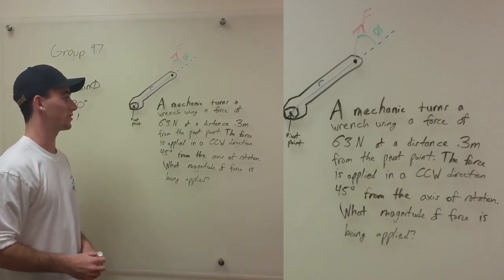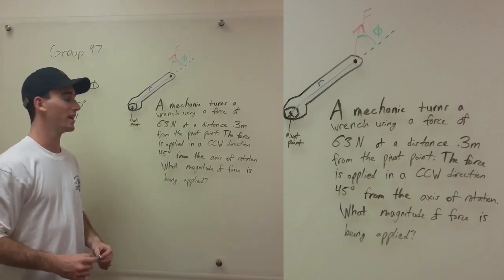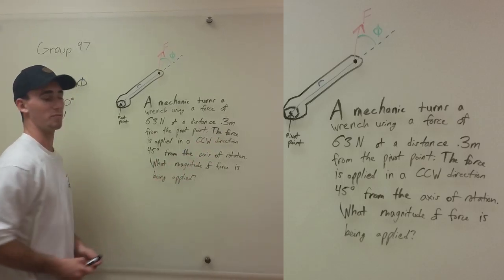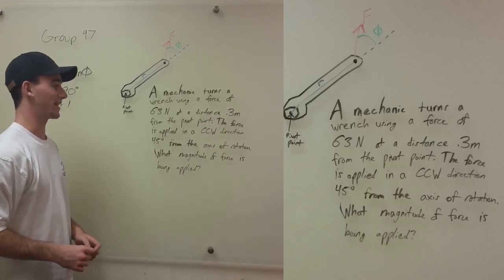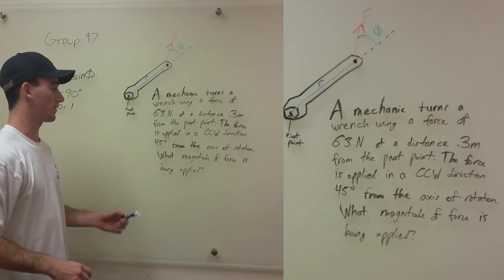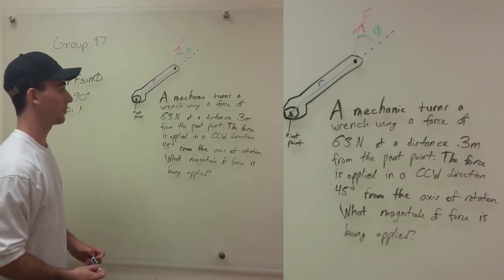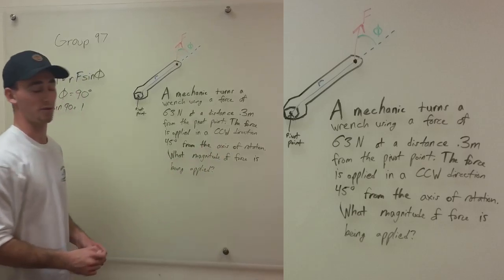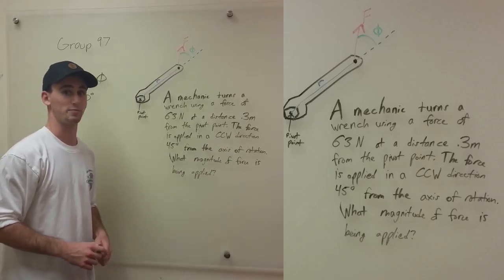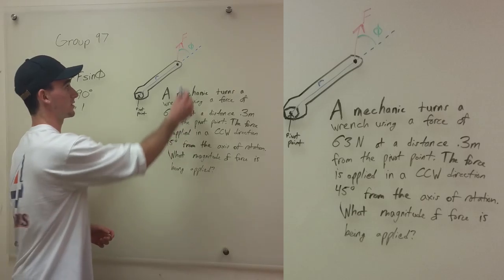So usually you are going to want the angle from the axis of rotation phi to equal 90 degrees, because that is when, because sine of 90 equals 1, so that is when you are going to have the most torque applied. But in this problem, the mechanic is doing something a little different.